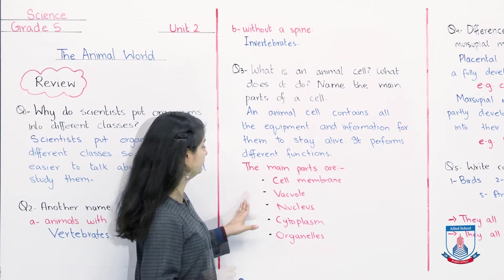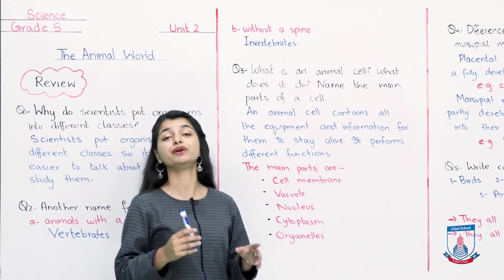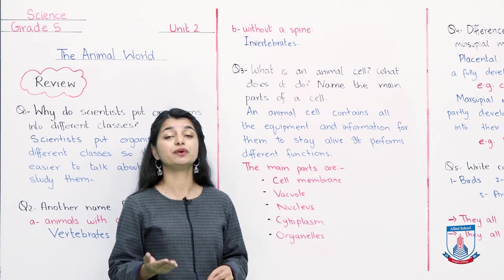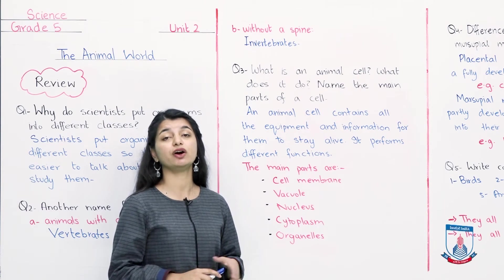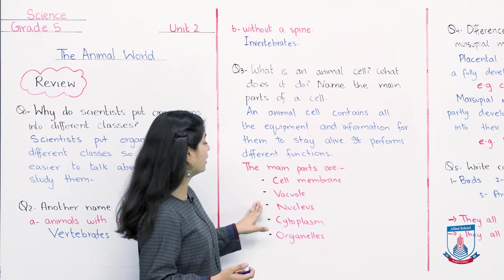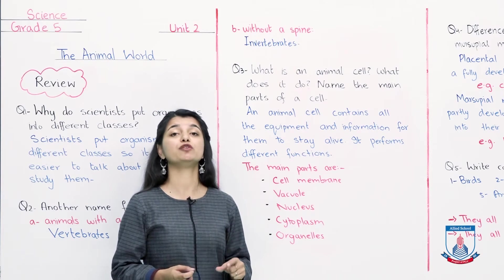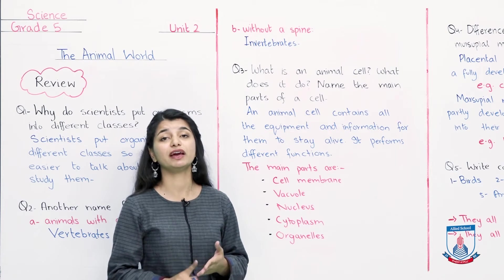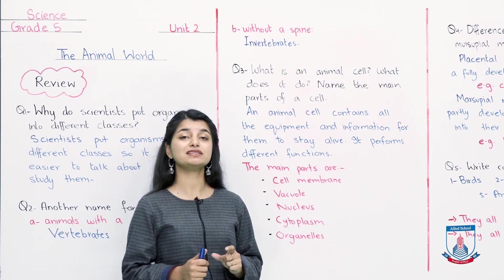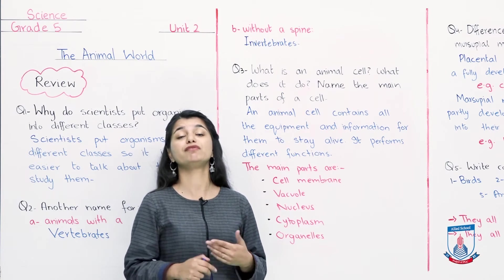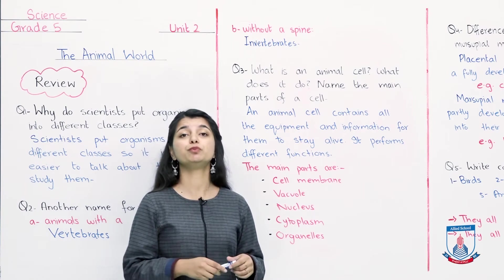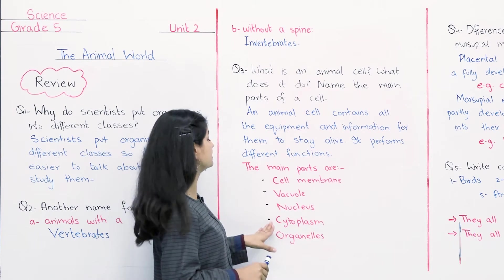The main parts are: The first part is the cell membrane. The cell membrane is outer covering. What does it do? It decides what will come from inside the cell, what will go outside the cell. The necessary things come from inside the cell and the waste material exits through the cell membrane. Then there are vacuoles, which are spaces in your cytoplasm. In your cell, what is inside? Air or water or any other component.